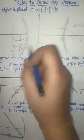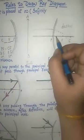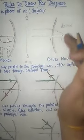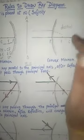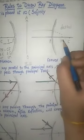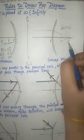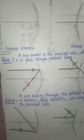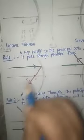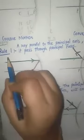The same can be done in the convex mirror, but in this case it is shown on the right-hand side of the mirror. This is our pole, this is our focus, and this one is our center of curvature.